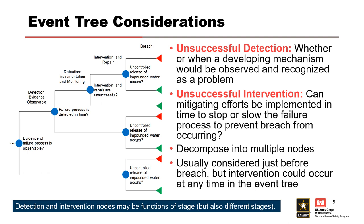Unsuccessful detection and intervention can be assessed as a single node or can be decomposed into multiple nodes. Intervention nodes may be functions of different stages. For example, observable evidence of seepage or leakage may be obscured by vegetation or tailwater inundation for low or high pools. Instrumentation and monitoring programs may be inadequate spatially or temporally to detect evidence even if it is observable. And if the evidence is observable and detected, intervention may be influenced by the physical ability to intervene or accessibility due to access roads being submerged by reservoir or spillway flow.